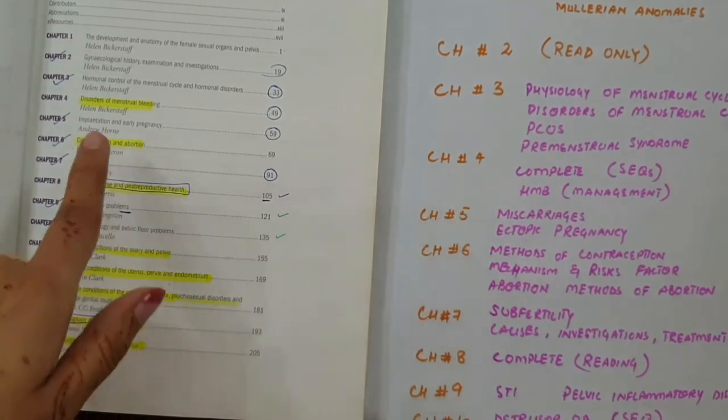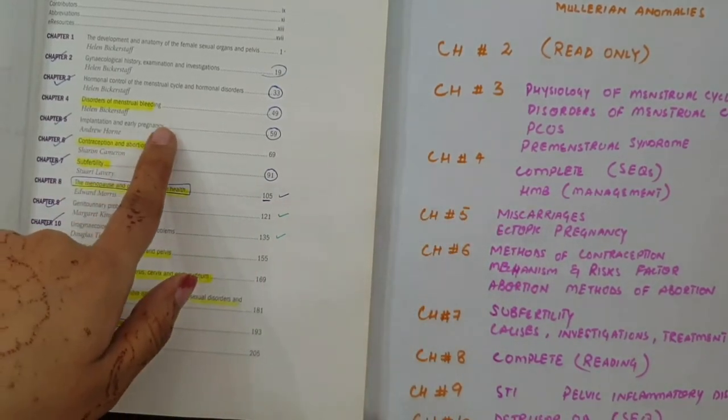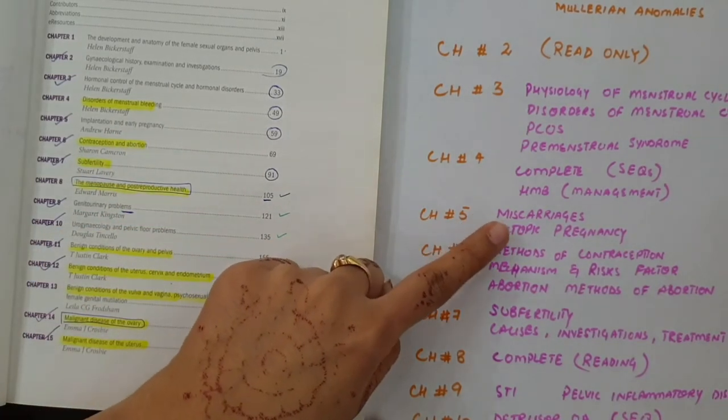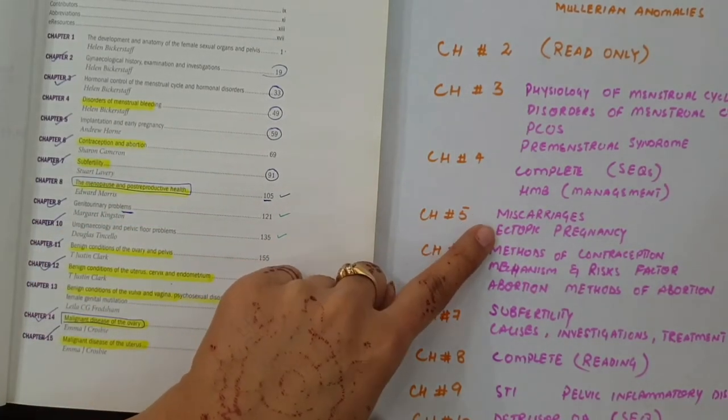The fifth chapter is Implantation and Early Pregnancy. More important are miscarriages in detail and ectopic pregnancy and ectopic pregnancy management.